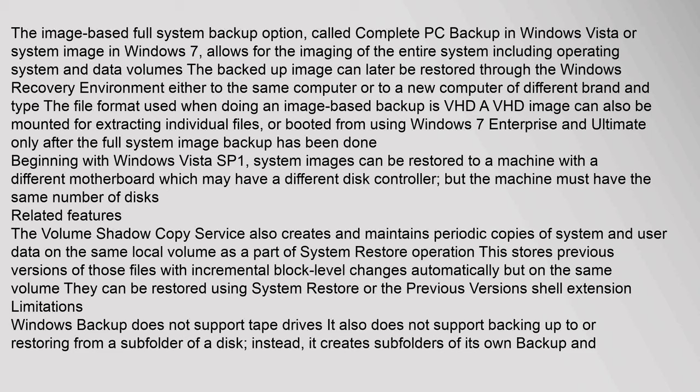System image, the image-based full system backup option, called Complete PC Backup in Windows Vista or System Image in Windows 7, allows for the imaging of the entire system including operating system and data volumes. The backup image can later be restored through the Windows Recovery Environment, either to the same computer or to a new computer of a different brand and type. The file format used is VHD. A VHD image can also be mounted for extracting individual files, or booted from using Windows 7 Enterprise and Ultimate only. Beginning with Windows Vista SP1, system images can be restored to a machine with a different motherboard which may have a different disk controller, but the machine must have the same number of disks.